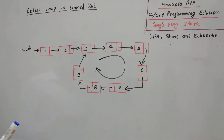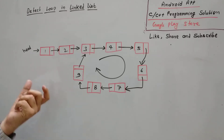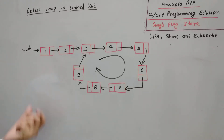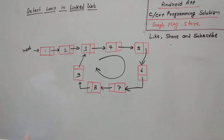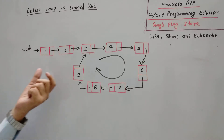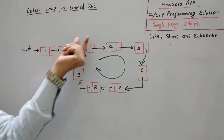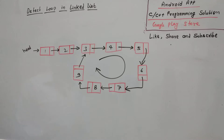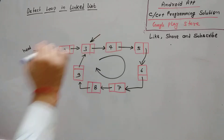This is a standard problem and we can solve it with the help of the two-pointer method, that means slow and fast pointers. I will discuss how to detect the loop and also how to find the position from which node there is a loop.